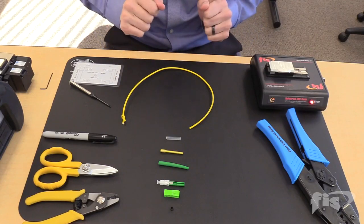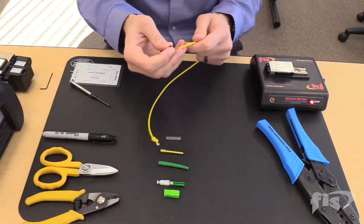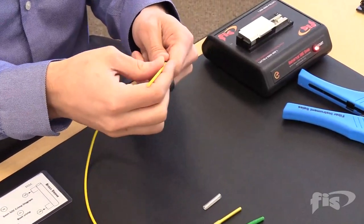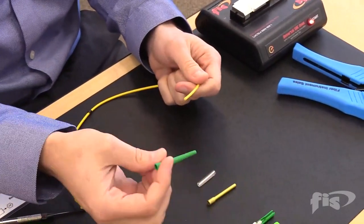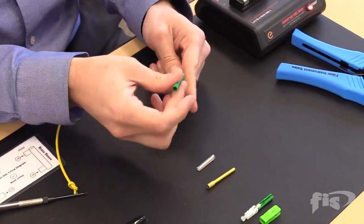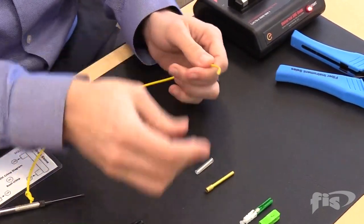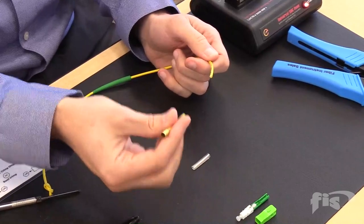Take the 3mm cable and assemble the back of the connector. First, slide the black crimp ring, followed by the 3mm boot, and the extended brass crimp ring.